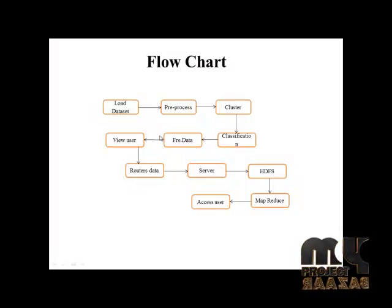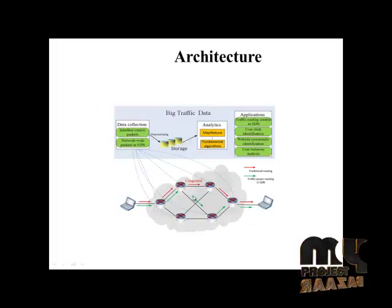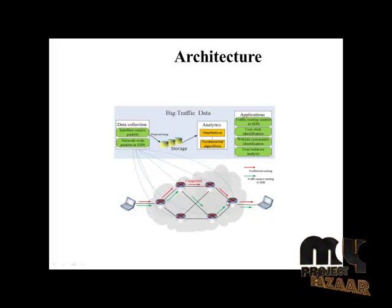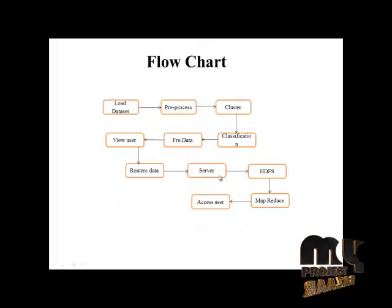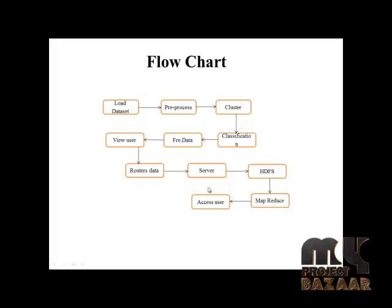After the user views the data, the particular data goes to multiple routers. The router information processes sequence data through different sets of routers. After passing through the routers, the data is stored on nodes, and finally the data is stored on the HDFS server. The HDFS server processes the MapReduce map and reduce steps, and finally users access the data.